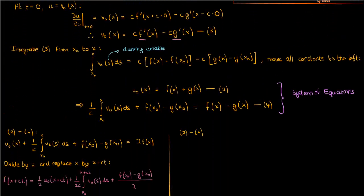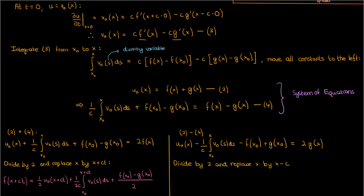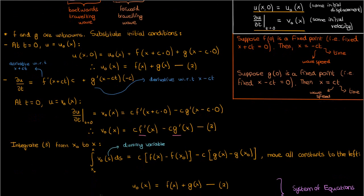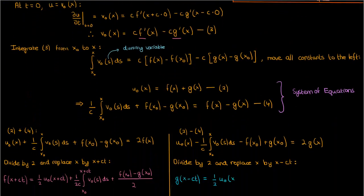Now, let's subtract 2 and 4 to get an expression for g of x. We'll end up with u0 of x minus 1 over c times the integral from x0 to x of v0 of s ds minus f of x0 plus g of x0 equals 2 times g of x. Once again, we're going to divide by 2 and replace the x by x minus ct to get an expression for our forwards traveling wave g of x minus ct.